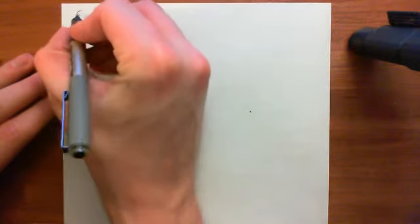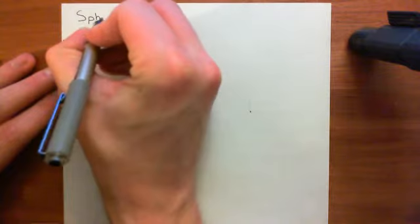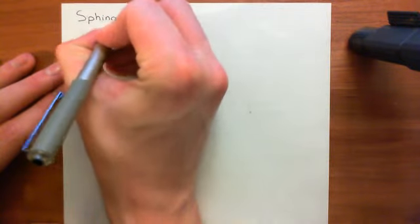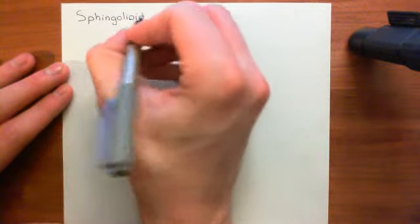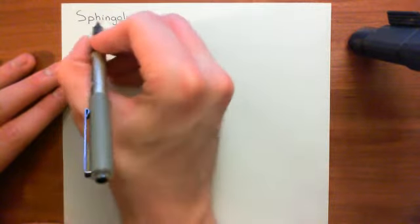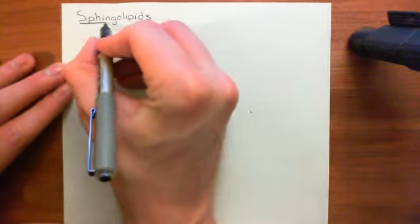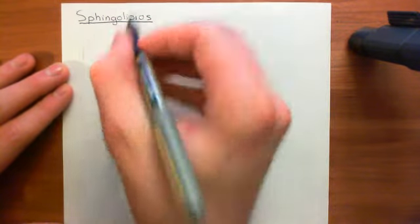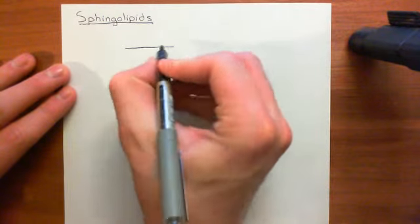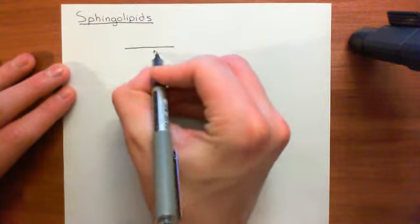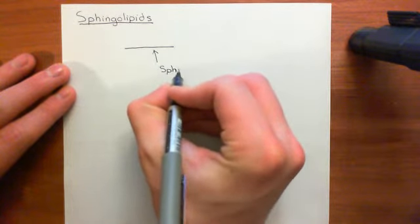Let's start off with the sphingolipids. We're discussing the sphingolipids to see other examples of phospholipids. Sphingolipids is another more niche area of lipids than the phosphoglycerolipids and the triacylglycerols, but they are still common within the body. Sphingolipids are all based on a new molecule that I'm going to introduce you to, and this molecule is called sphingosine.